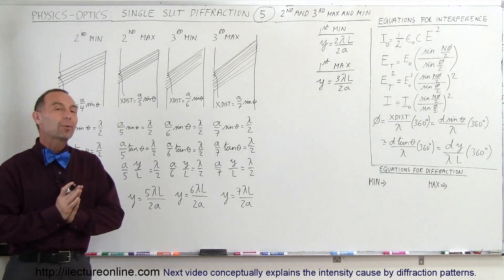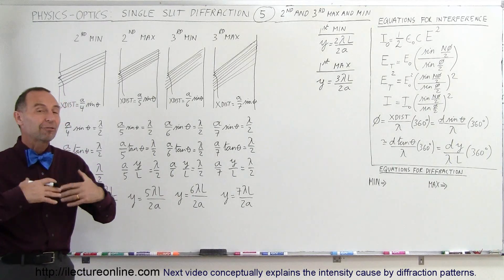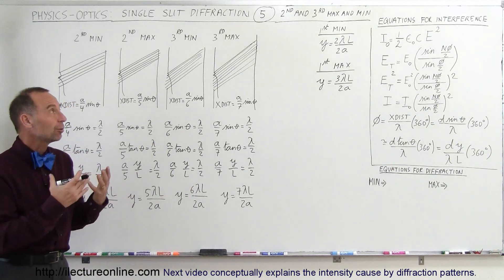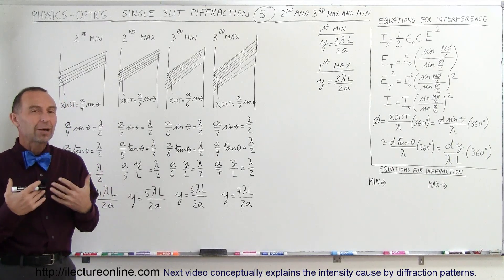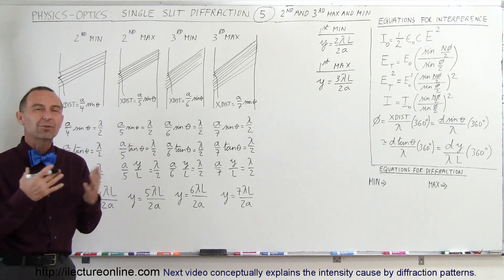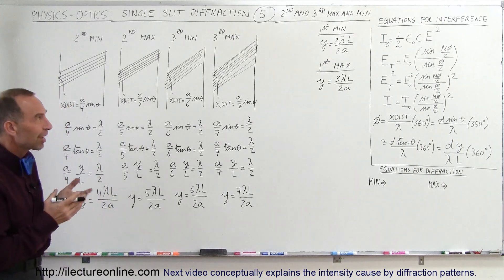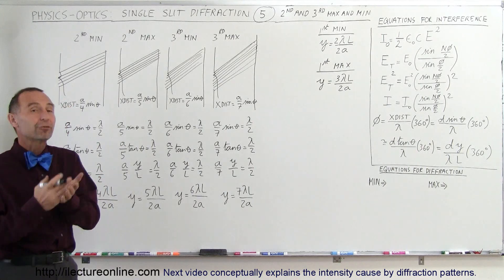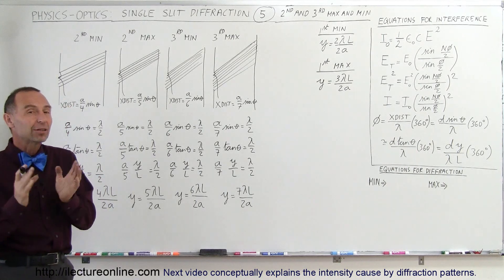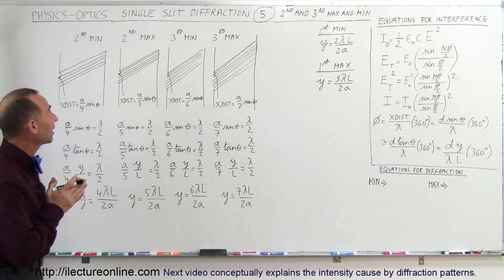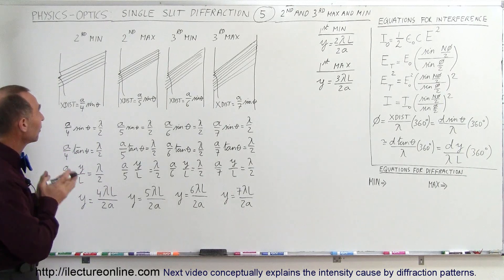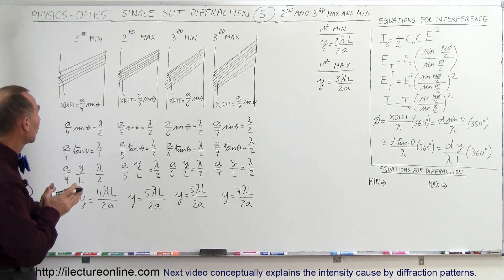Welcome to ElectronLine. Now we're going to take a look at the diffraction pattern in general to find out where all the maxima and minima can be found. We already found the first minimum and the first maximum. Now let's see where we find the second minimum and the second maximum.